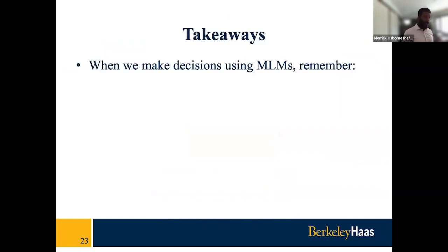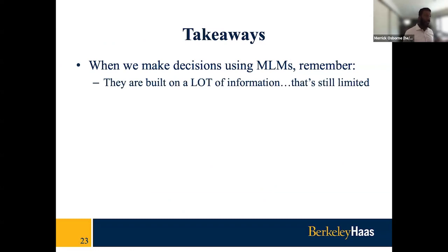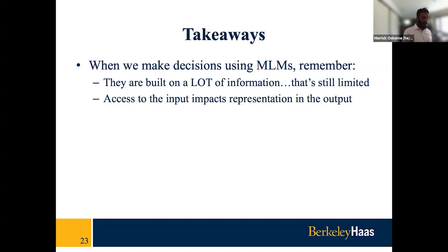There are some takeaways I want to leave you with. The first is in regard to how we make decisions using machine learning models. Yes, they're built on a ton of information, but in many ways that information is still limited — limited oftentimes because of who is in the data set. Access to the input is going to impact representation in the output. In other words, your ability to be represented in the machine learning model is going to impact its ability to make equitable decisions. And the same is true for other groups too — their ability to be represented in the model is going to shape the extent to which it can make equitable decisions for or against them.